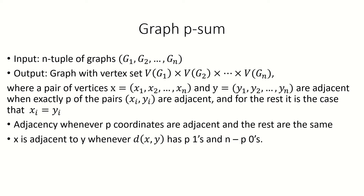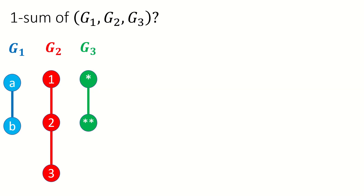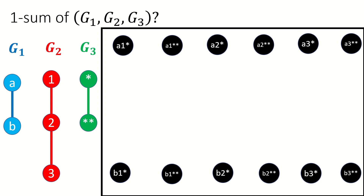Let's look at an example now. What's the 1-sum of the ordered list of graphs shown here? First, we need to find the vertex set of our output graph using the Cartesian product. Next, two vertices in the output graph will be adjacent when one of their coordinates are adjacent and two of their coordinates are equal.